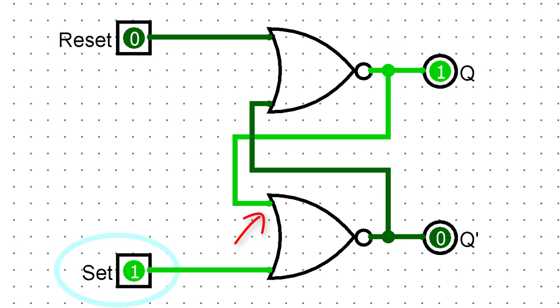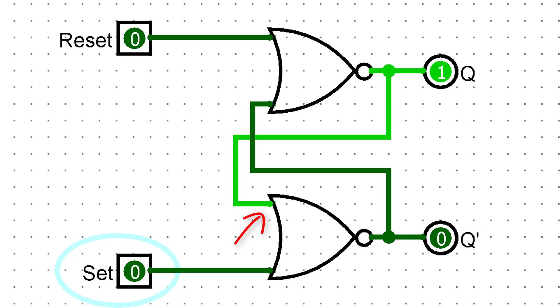As a result, an input to the first NOR is held on even after the set signal is switched off. So the latch remains in its new stable state.